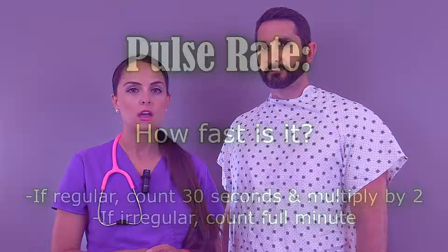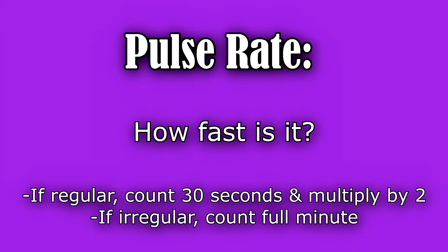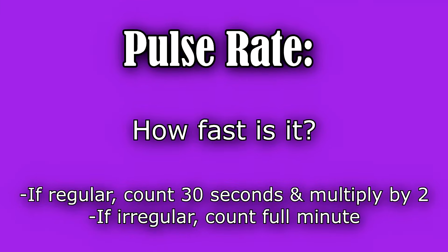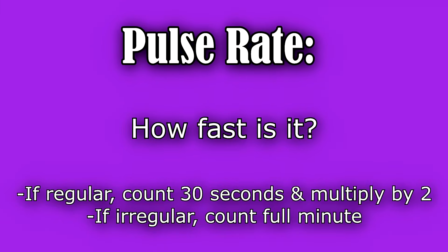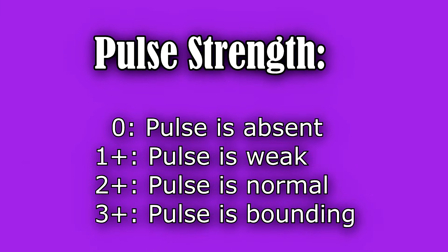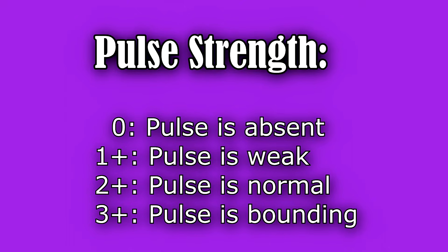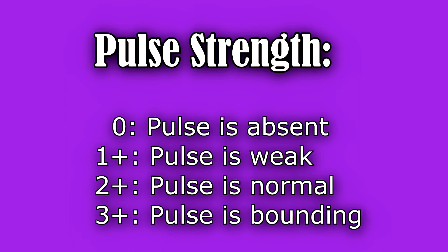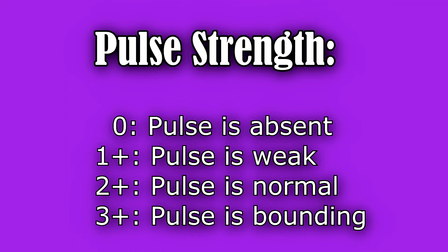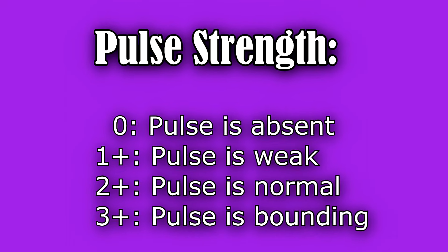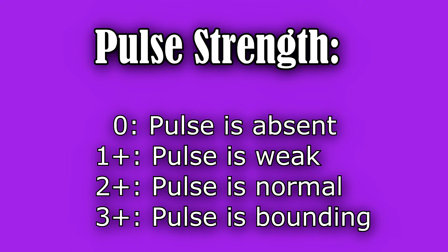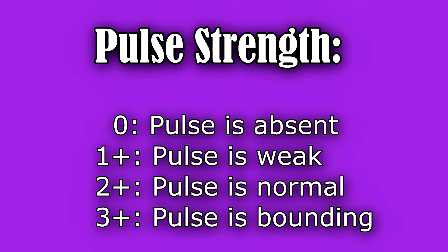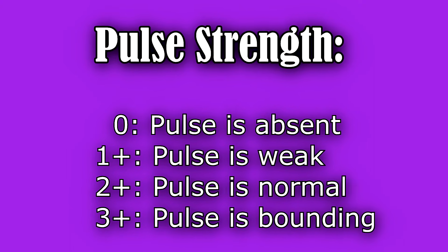Whenever you're assessing the pulse, you will be looking at a few things. One thing will be the rate — how fast is it — along with the strength, and you'll be grading it on a scale of zero to three: with zero being absent, one plus it's weak, two plus it's normal, and three plus it's bounding.